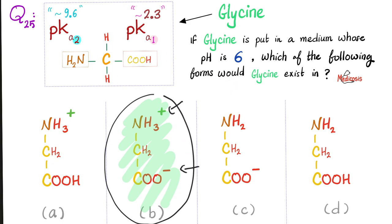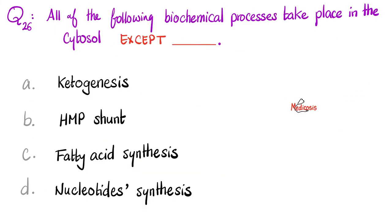If you're struggling with this concept, please refer to my video titled Titration of Amino Acids — you will find it in my biochemistry playlist. Next: all of the following biochemical processes take place in the cytosol or cytoplasm, except — ketogenesis, HMP shunt, fatty acid synthesis, or nucleotide synthesis. Let me know your answer in the comments. You will find the answer key in the next video in this biochemistry playlist.